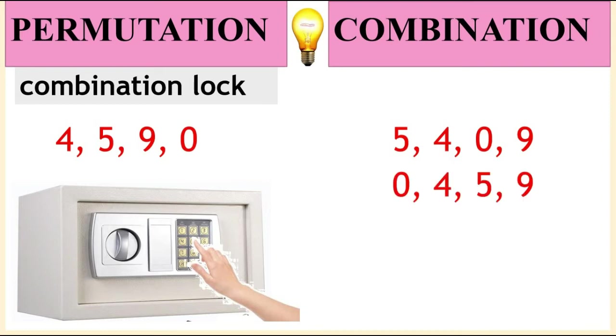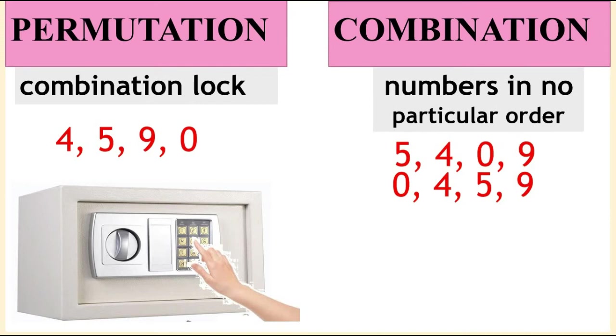But if the order of these numbers doesn't matter, or the numbers are in no particular order, as long as you press any of the numbers 4, 5, 9, 0, then the safety box will open. This suggests combination.